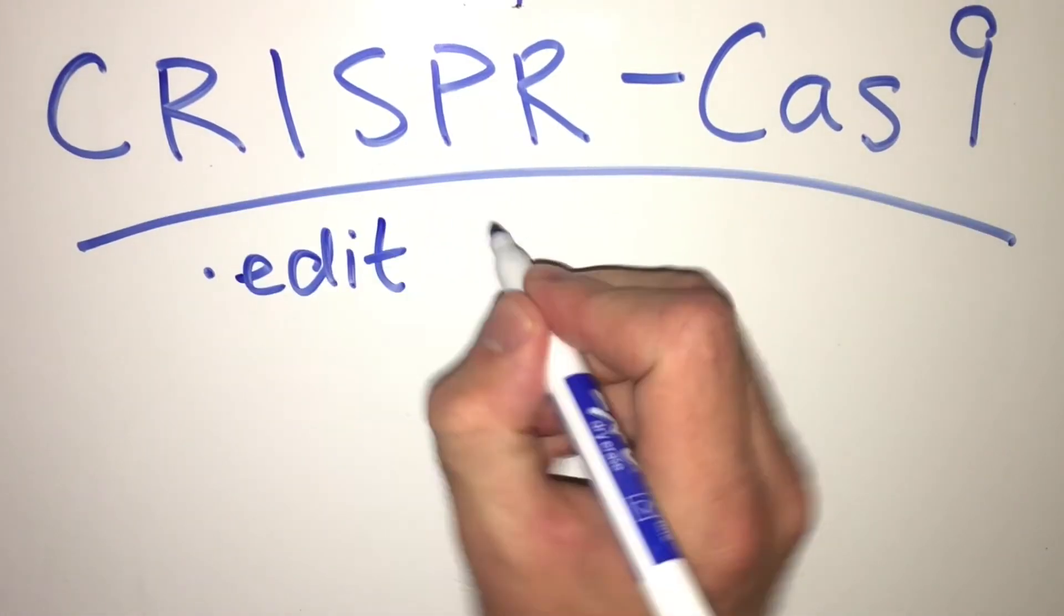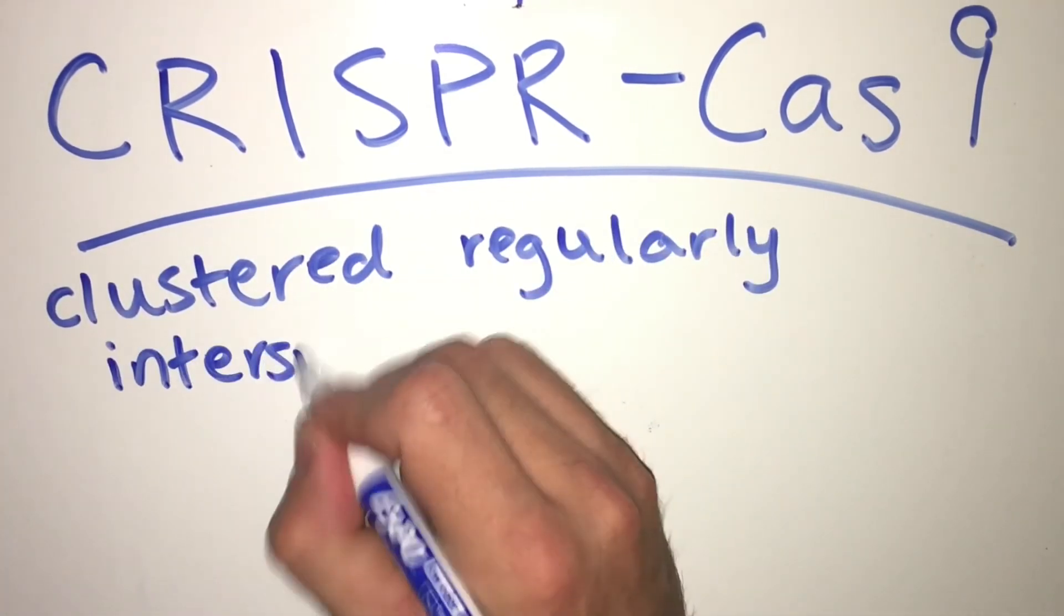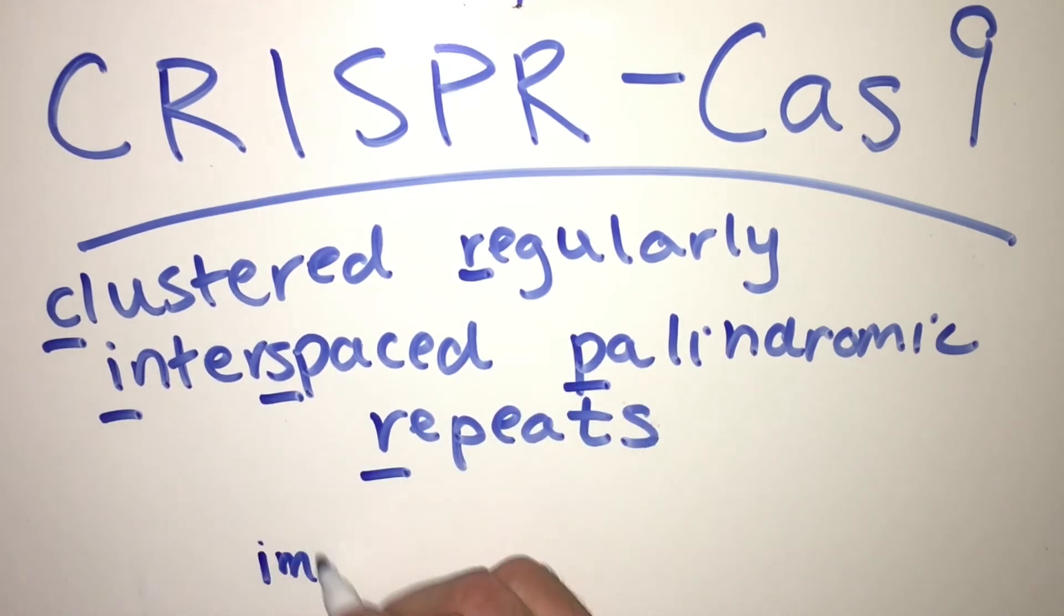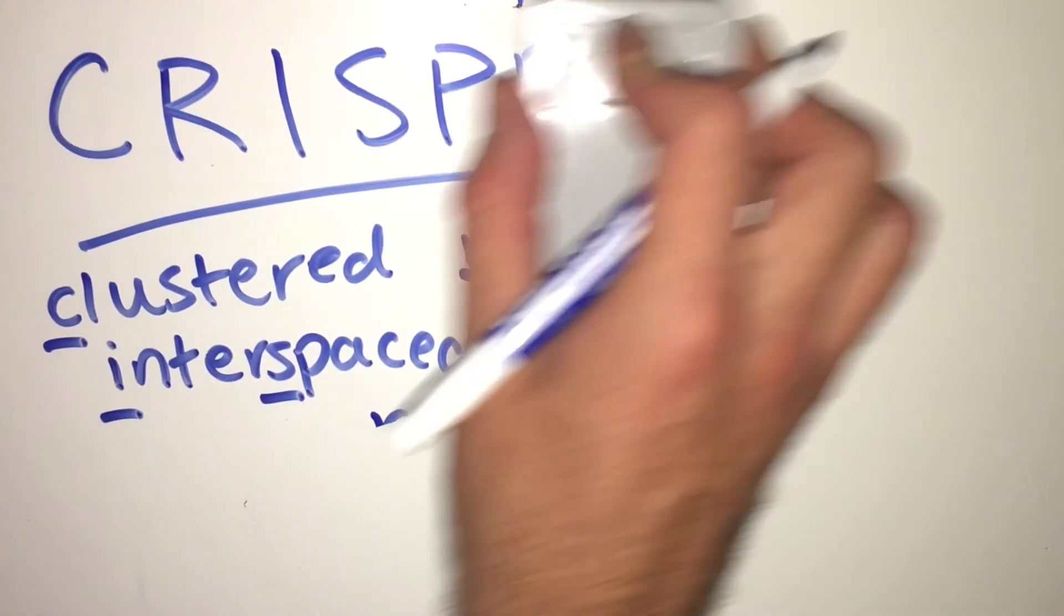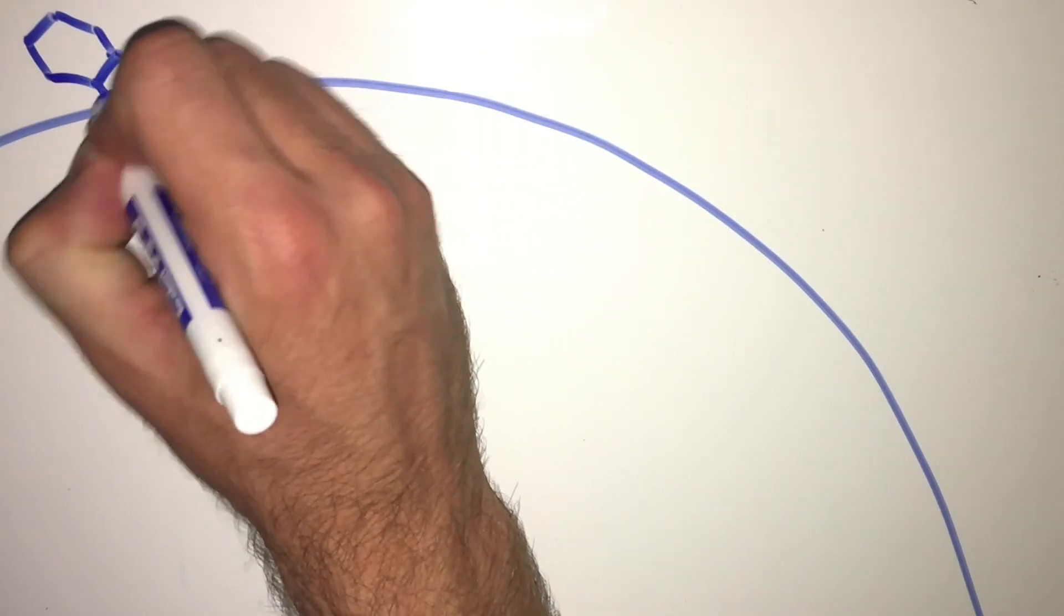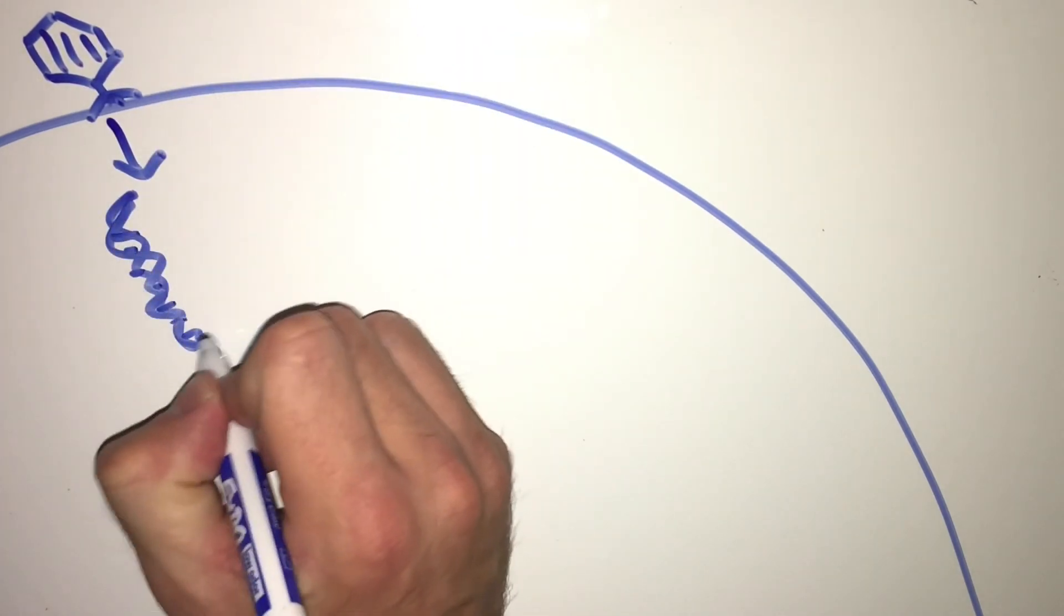The next technique we'll discuss to edit the genome of a cell, or knock out a gene, is CRISPR-Cas9. CRISPR, which stands for Clustered Regularly Interspaced Palindromic Repeats, was originally discovered in bacteria as an immune response to invading viruses. We'll first discuss how the mechanism occurs in bacteria, and then show how scientists have been able to employ it to knock out or edit genes in eukaryotes. When a virus latches onto a bacterial cell, it inserts its DNA into the bacteria, with the intention of integrating that DNA into the bacterial genome.